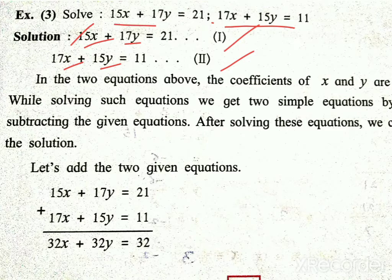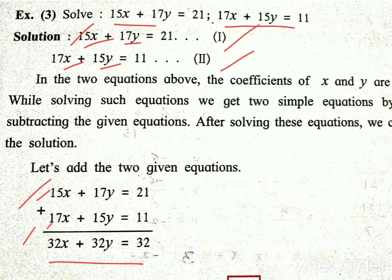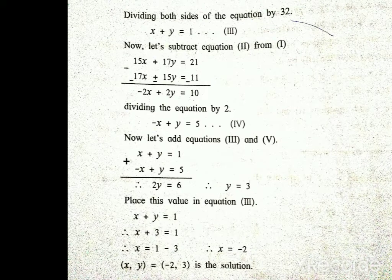When solving these types of equations, firstly we add the two equations to get one equation, and secondly we subtract. By adding these two equations, we get 32x plus 32y is equal to 32. Dividing both sides by 32, we get x plus y is equal to 1. That is equation number 3.